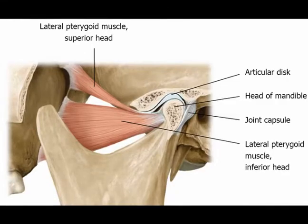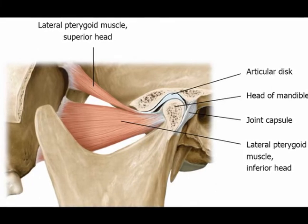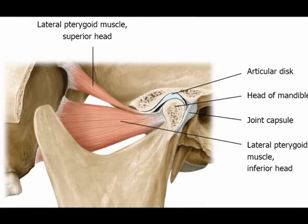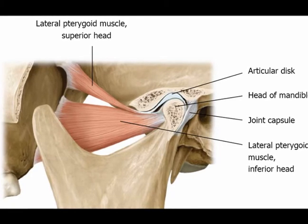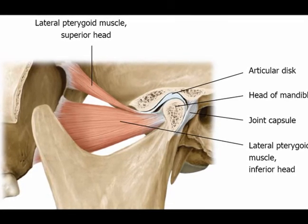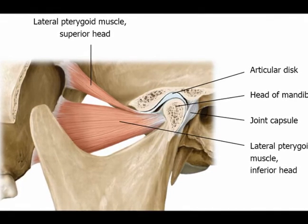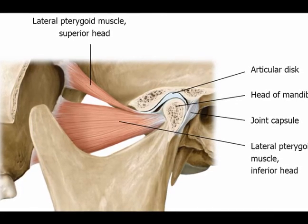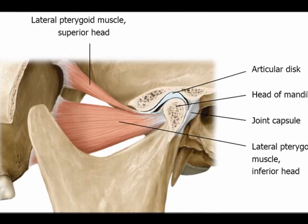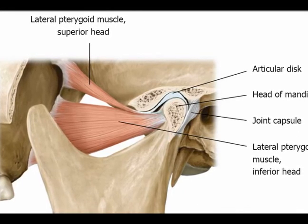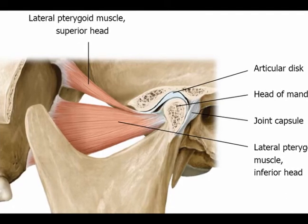In the temporomandibular joint, the upper joint compartment formed by the articular disc and the temporal bone is involved in the translation movement, which is the secondary gliding motion of the jaw as it is opened widely. The part of the mandible which connects to the upper surface of the disc is the condyle, and the part of the temporal bone which connects to the upper surface of the disc is the articular fossa, or mandibular fossa.